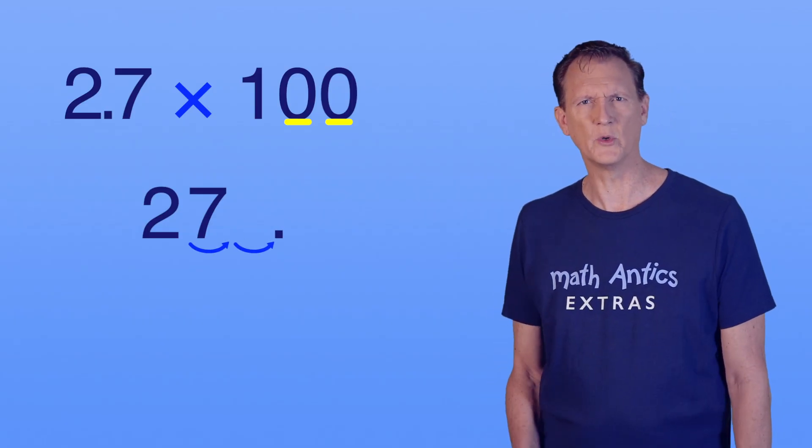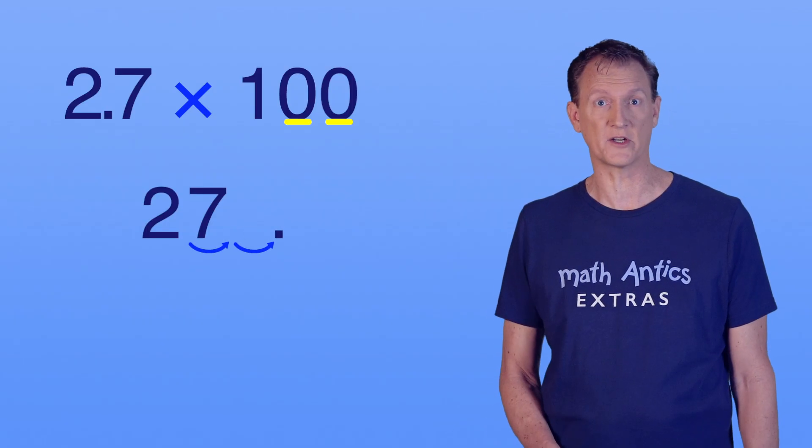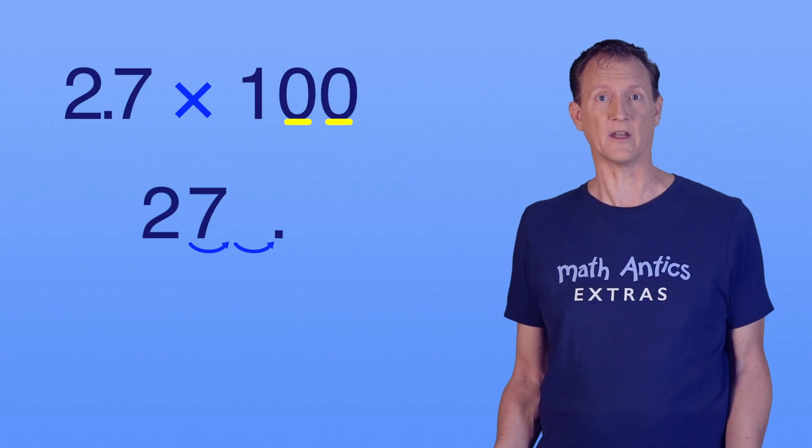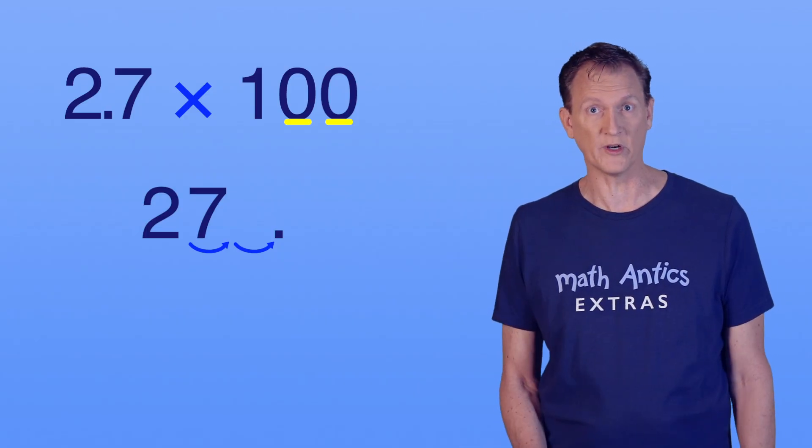Uh oh, that doesn't look right. We shifted our decimal point past the digits in our number, and now it looks like 27. But 2.7 times 100 is not 27.